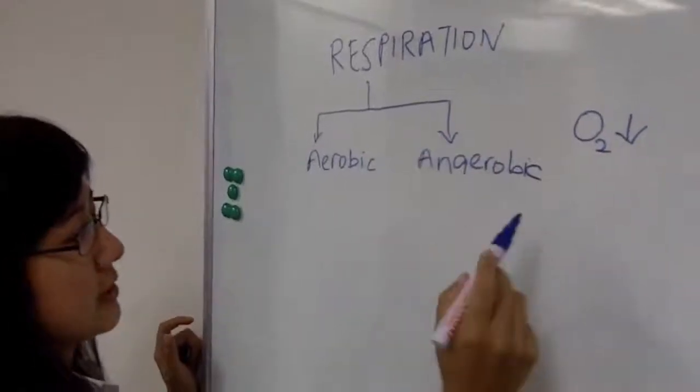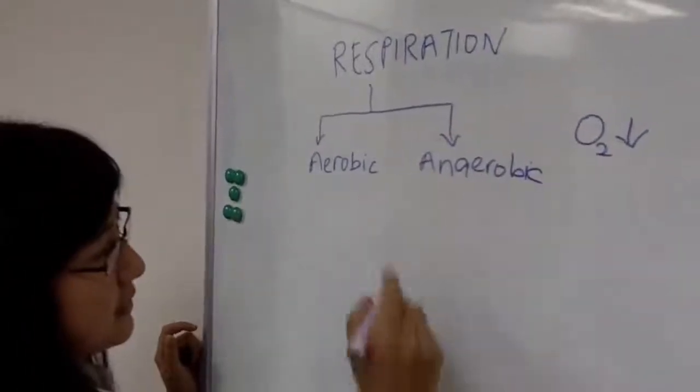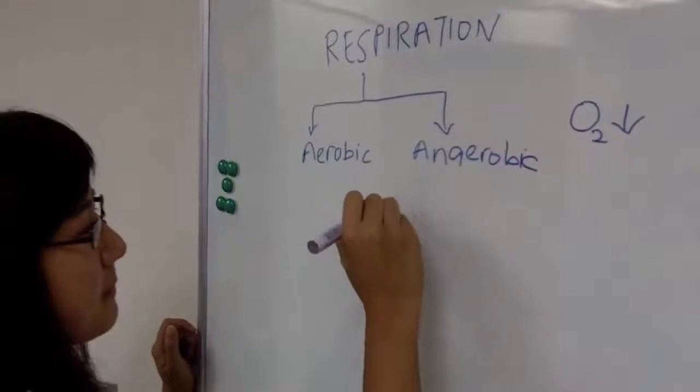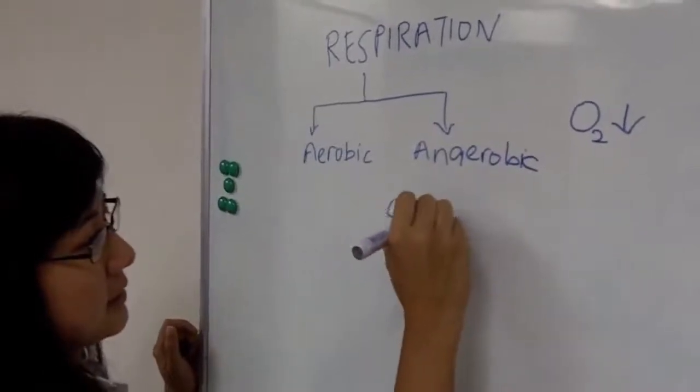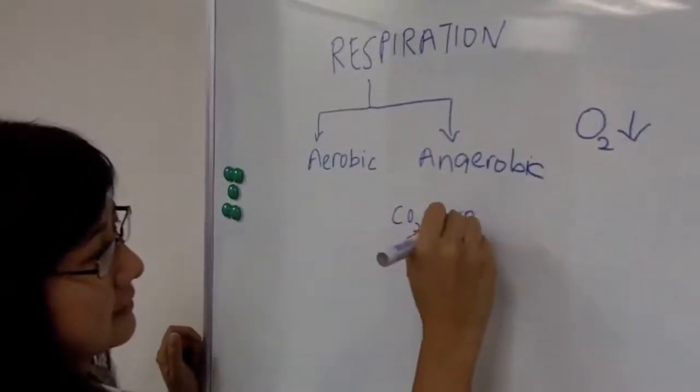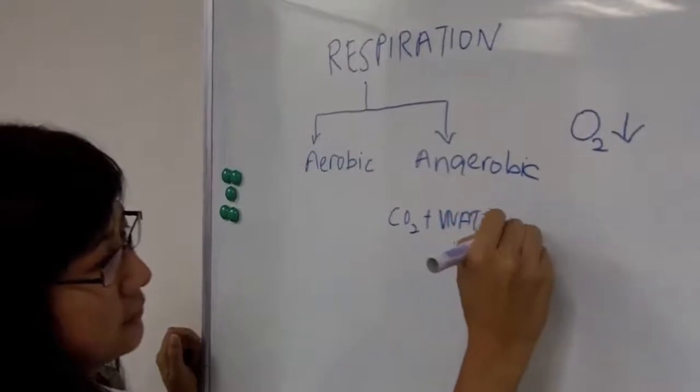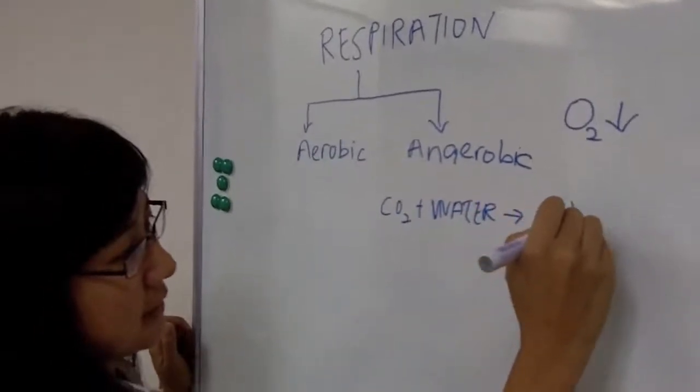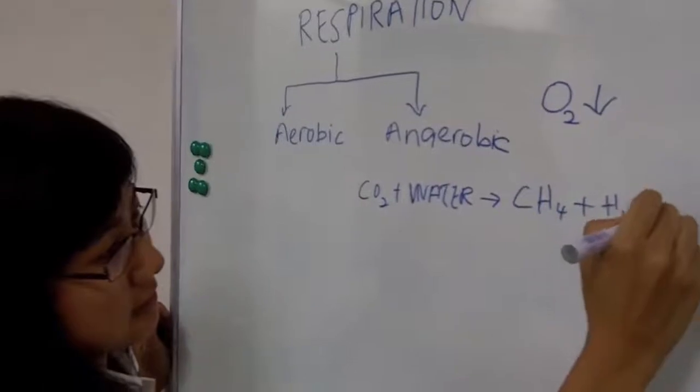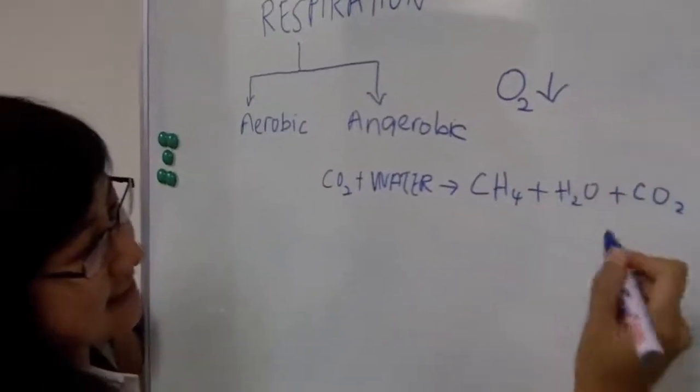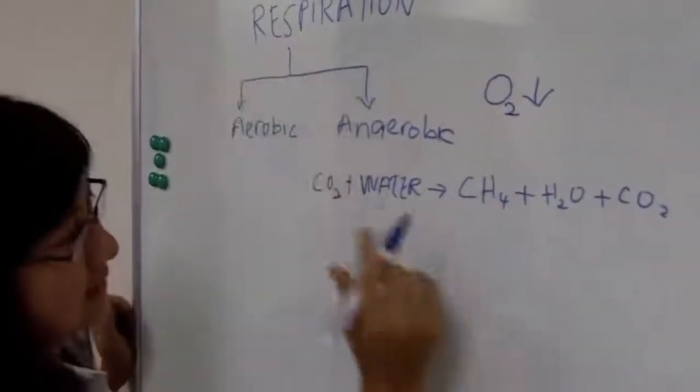So from this situation, through a series of steps, you'll get a condition where carbon dioxide and water will give you methane, some carbon dioxide, and actually some hydrogen sulfide, but it's through another step.